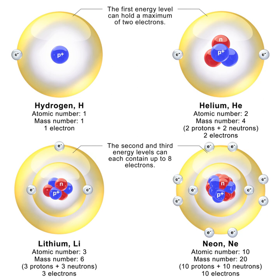Their properties and interactions are described by nuclear physics. The chemical and nuclear properties of the nucleus are determined by the number of protons, called the atomic number, and the number of neutrons, called the neutron number. The atomic mass number is the total number of nucleons.